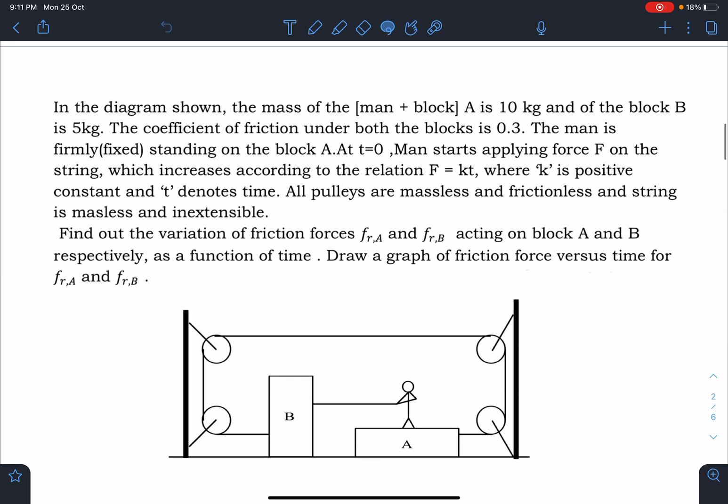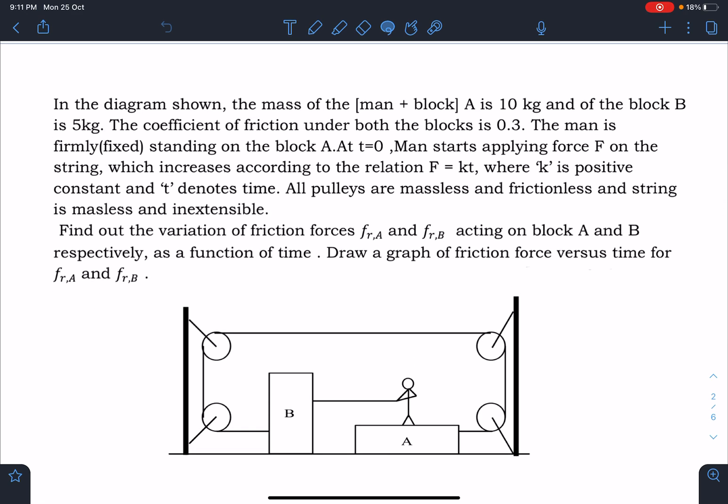So here is the problem statement. In the diagram shown, the mass of the man plus block A is 10 kg and of the block B is 5 kg. The coefficient of friction under both the blocks is 0.3. The man is firmly fixed standing on block A.